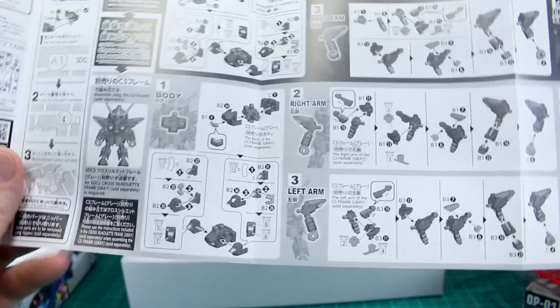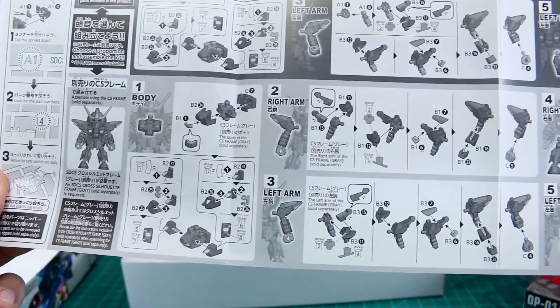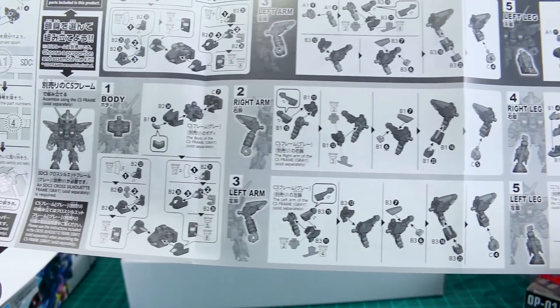So if you want regular SD form, you just follow the instructions there on the top. If you want the SD form using the SD cross silhouette frame, then you use these instructions there along the bottom.